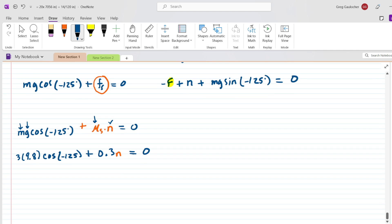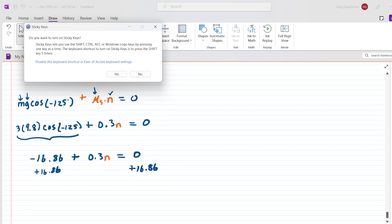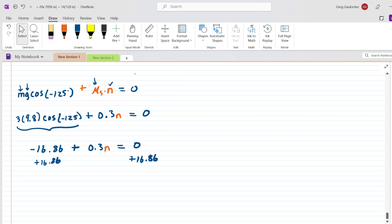Now, we could pick up our calculator, make sure it's set to degree mode, and enter this into the calculator. When you do that, you get about negative 16.86. And then we have the plus 0.3n. Next, to solve for n, we'll add the 16.86 to both sides. And that gives us 0.3n is equal to that 16.86. And then let's divide both sides of the equation by 0.3. And we can see that the normal force is equal to 56.21. And because it's a force, this comes out in newtons.